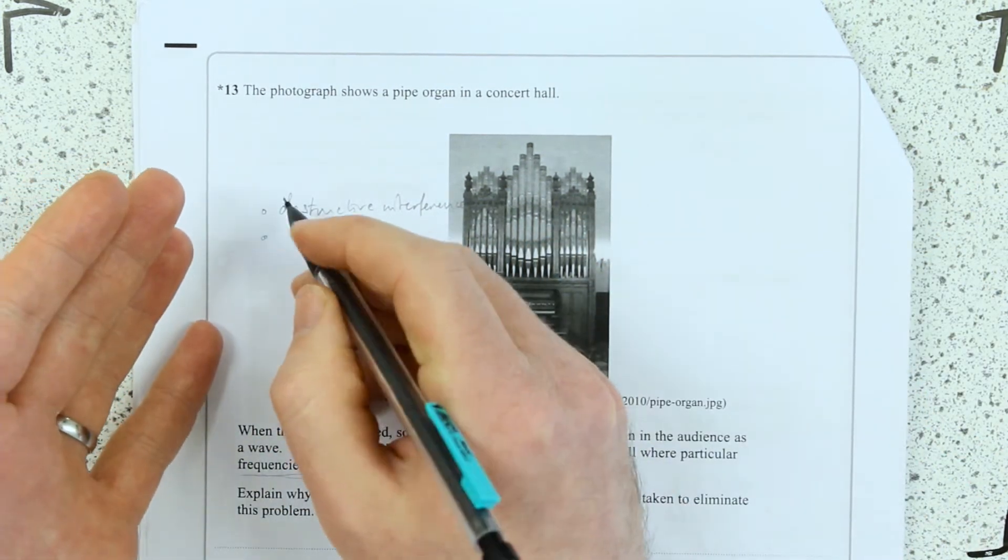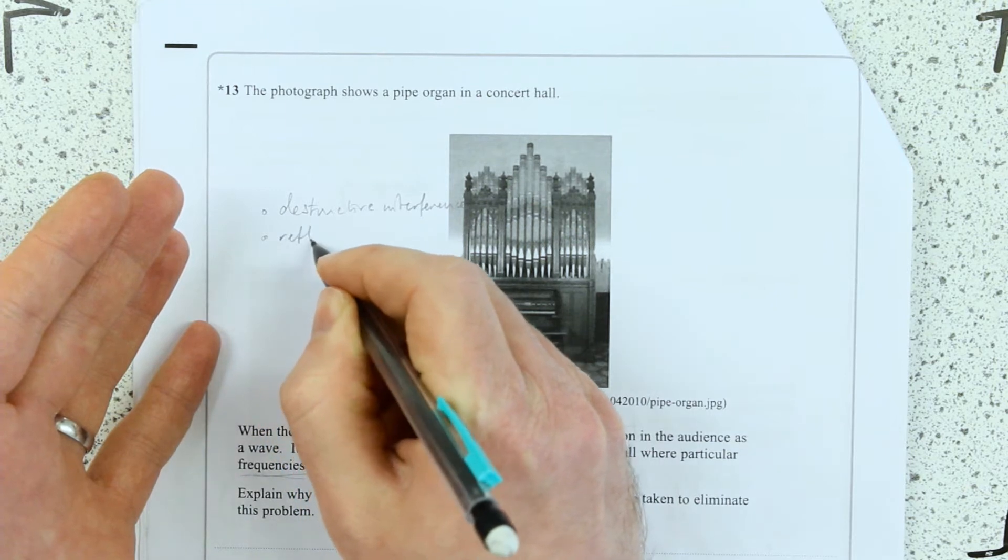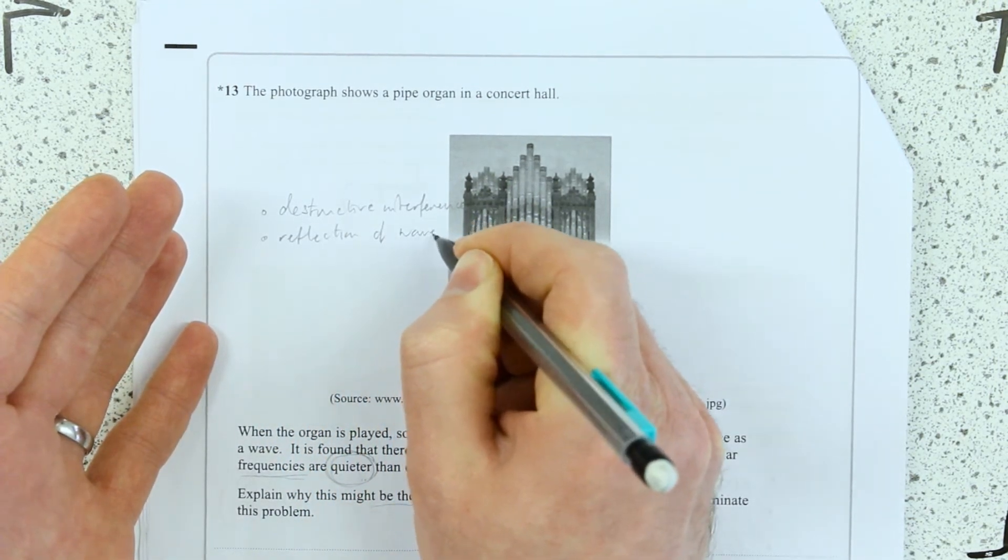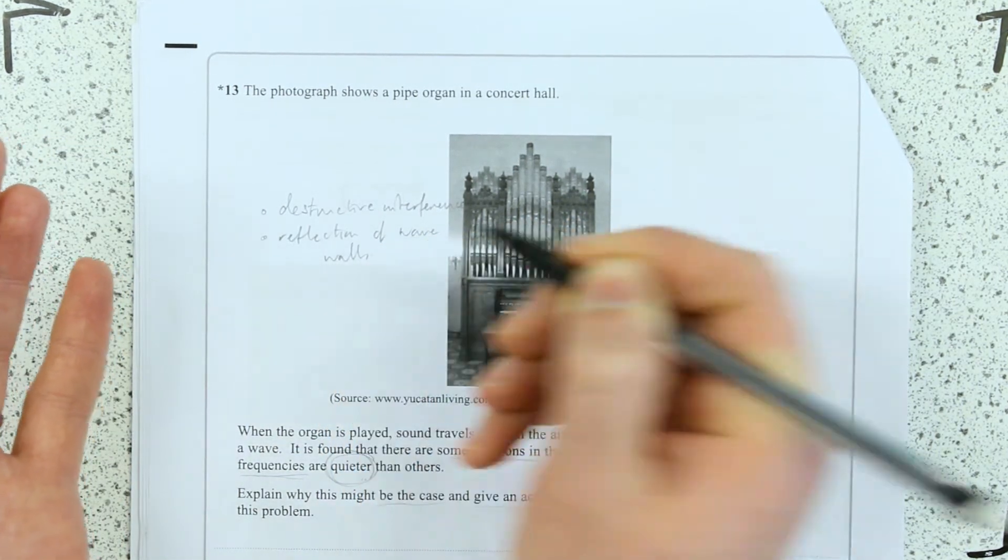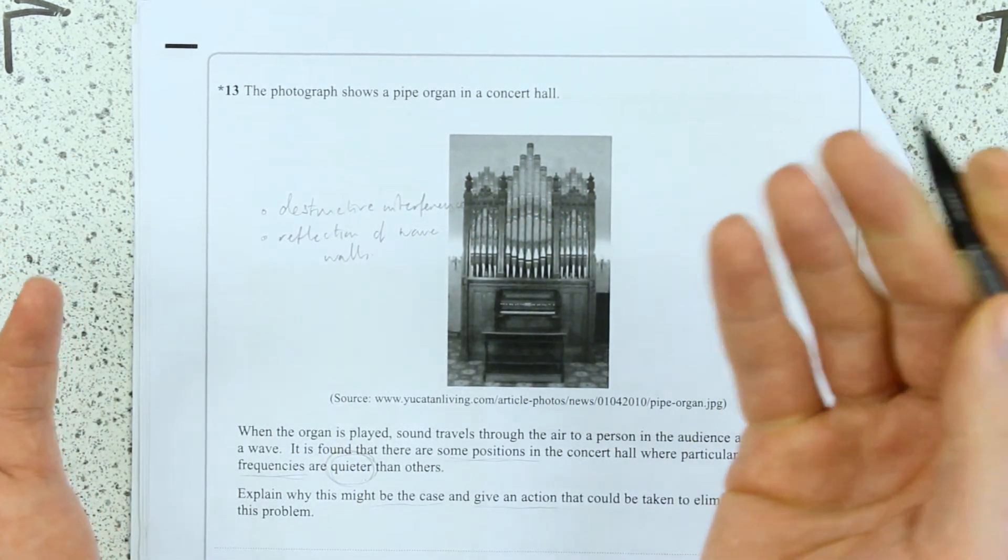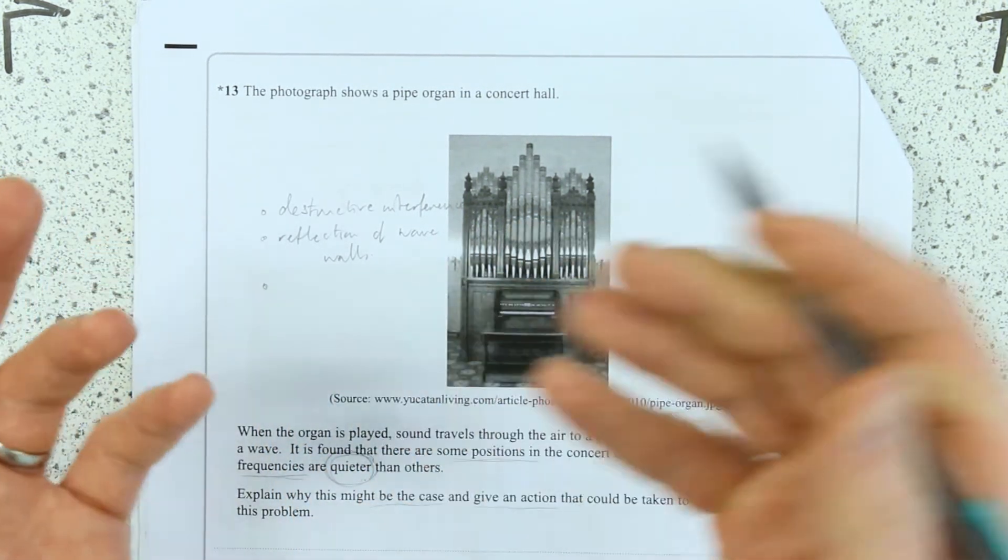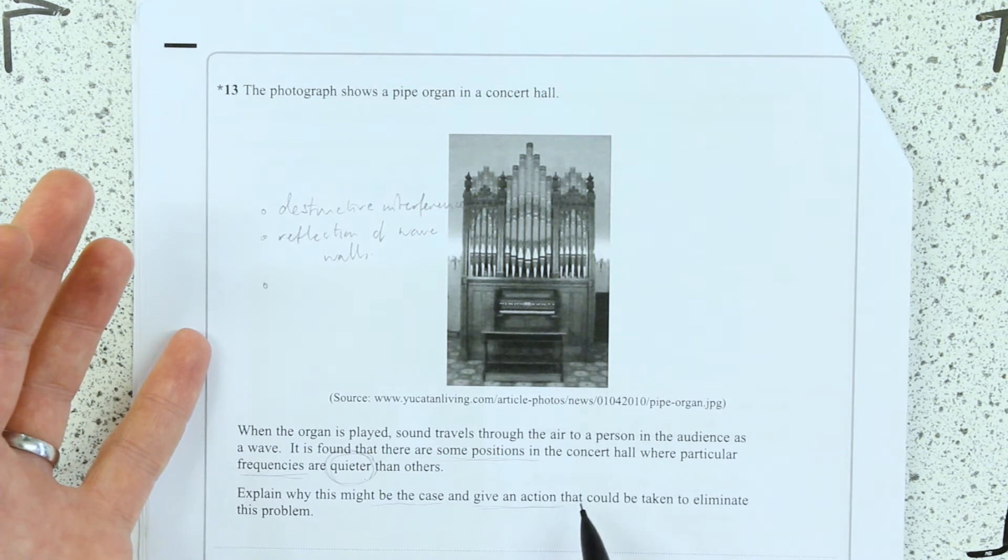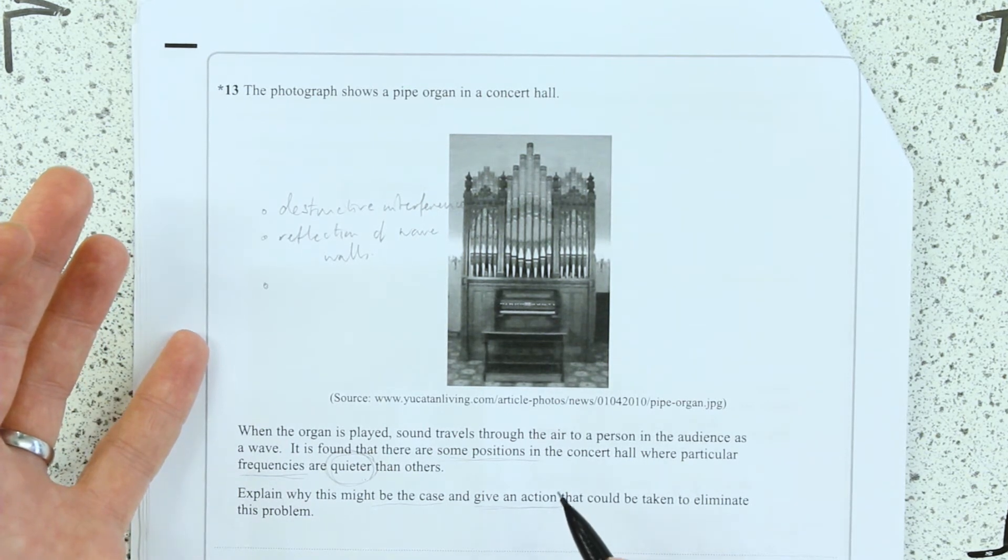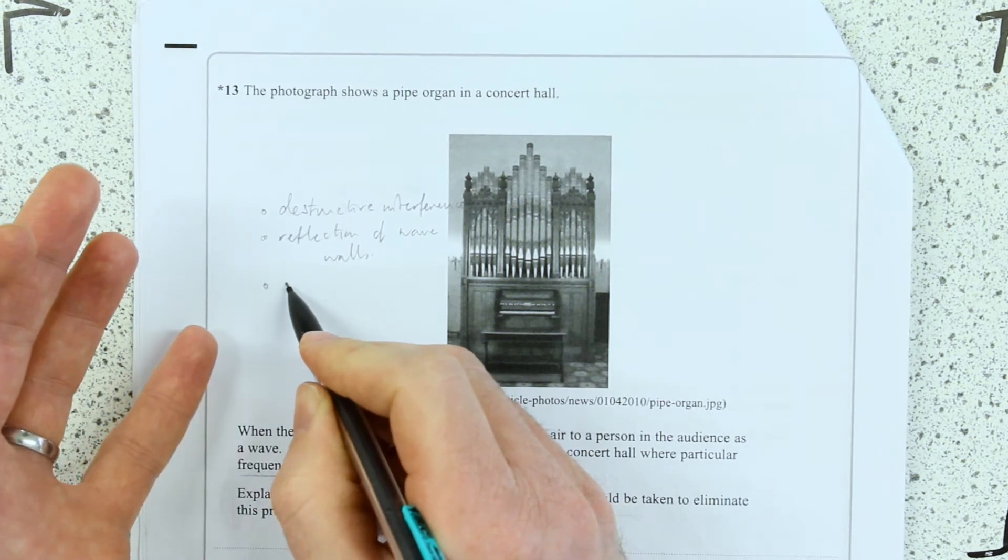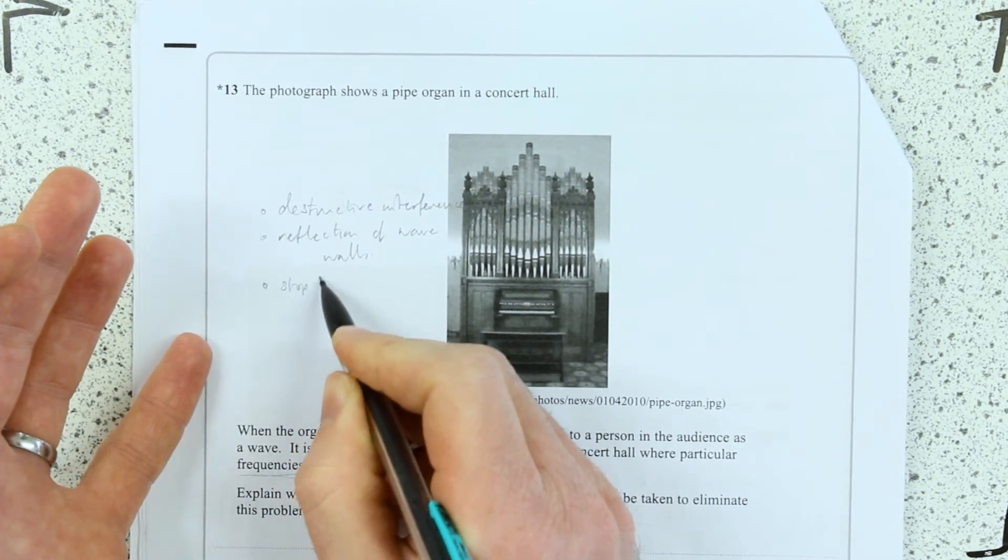So there's got to be some reflection of waves. Where do you think it's going to be reflecting from? It's probably reflecting off the walls of this building or something else. And then how can we stop that? An action we could take. Well we've got to stop the reflection somehow. So I don't know, we're just going to talk about how we're going to stop the reflection.